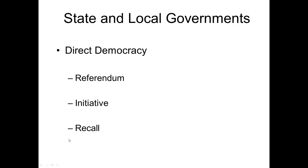Another method available in some states is recall — a tool where if an elected state official is really unpopular or has done something that upset the people, they can initiate a process to try to remove that person from office. The process usually starts with a requisite number of signatures outlined by law; if enough signatures are gathered, the state is forced to call a special election specifically to determine whether to keep or remove the official.